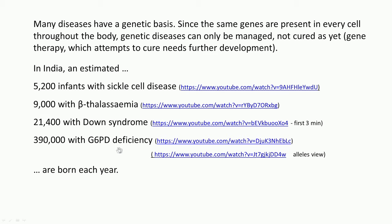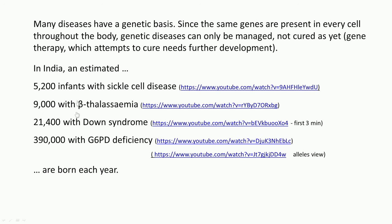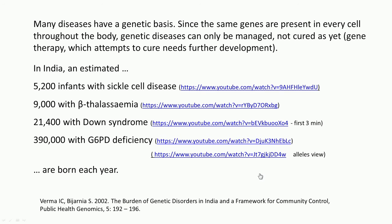G6PD deficiency seems to affect a large number of infants born every year. These statistics are from a paper published in 2002 by Verma and Vijarnia, 'The Burden of Genetic Disorders in India and a Framework for Community Control,' published in Public Health Genomics. The numbers would be different now, but it gives an idea of the prevalence of such diseases in India.